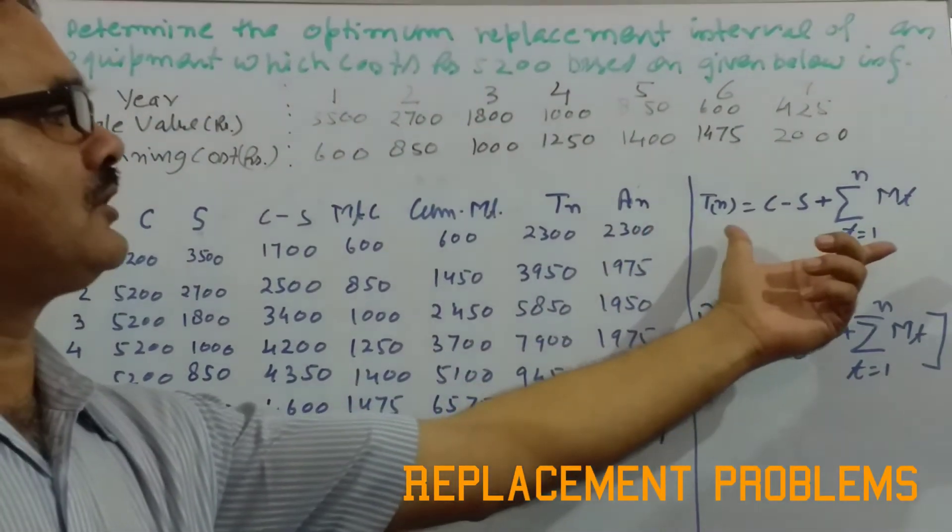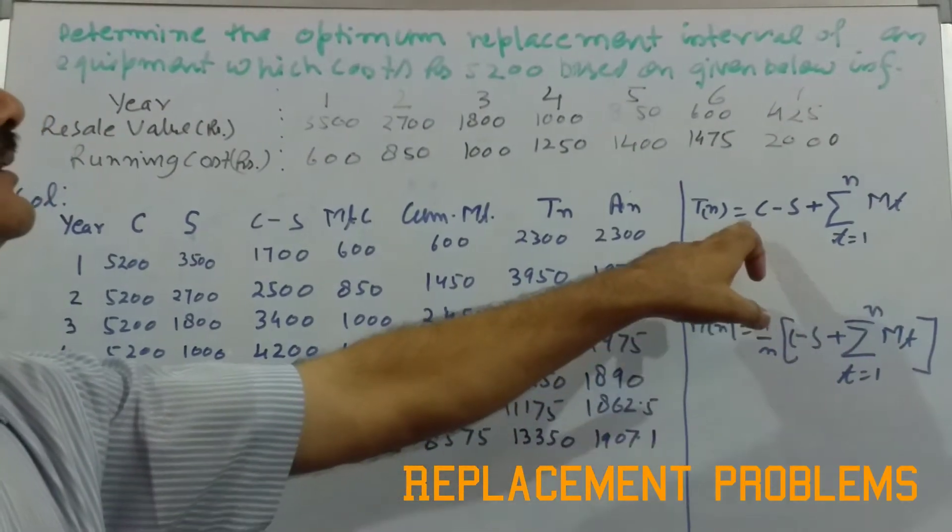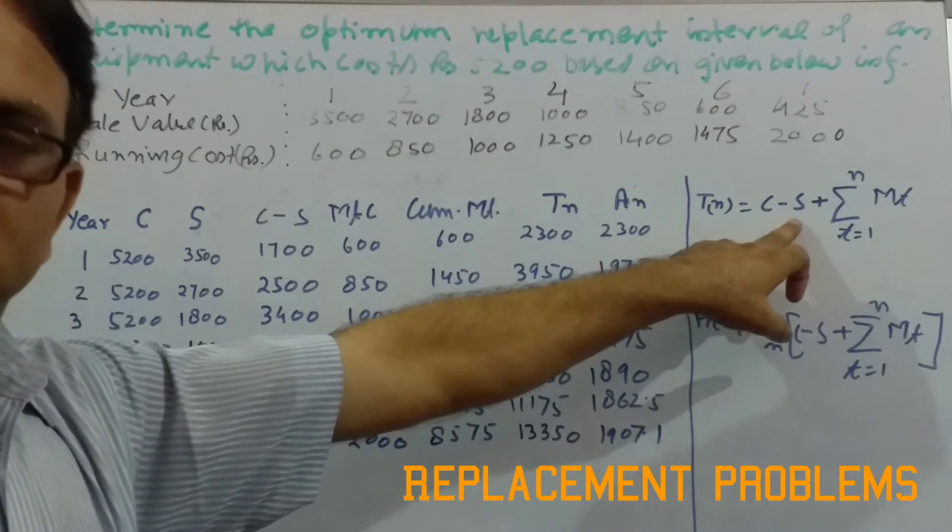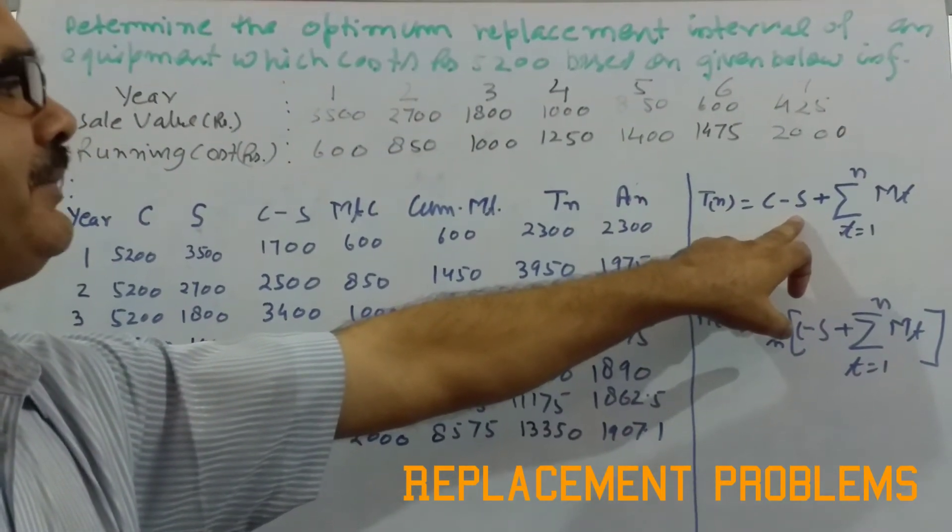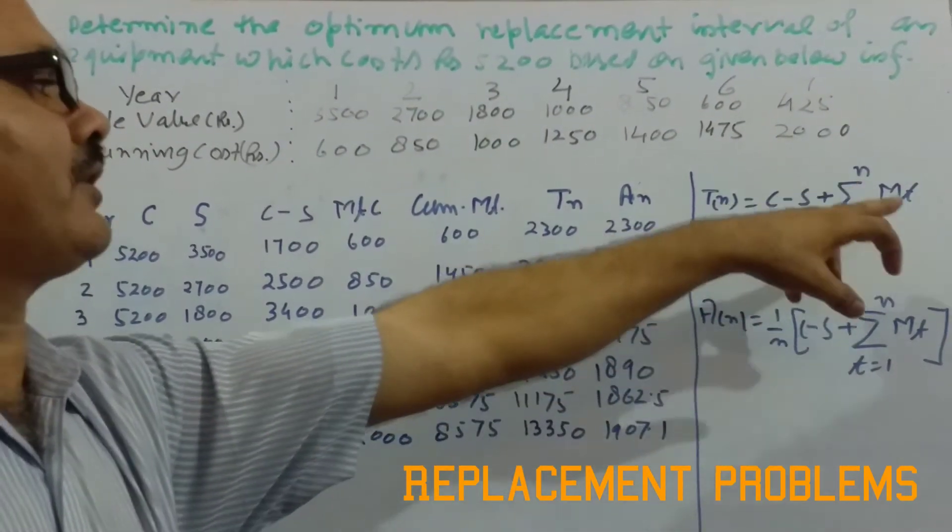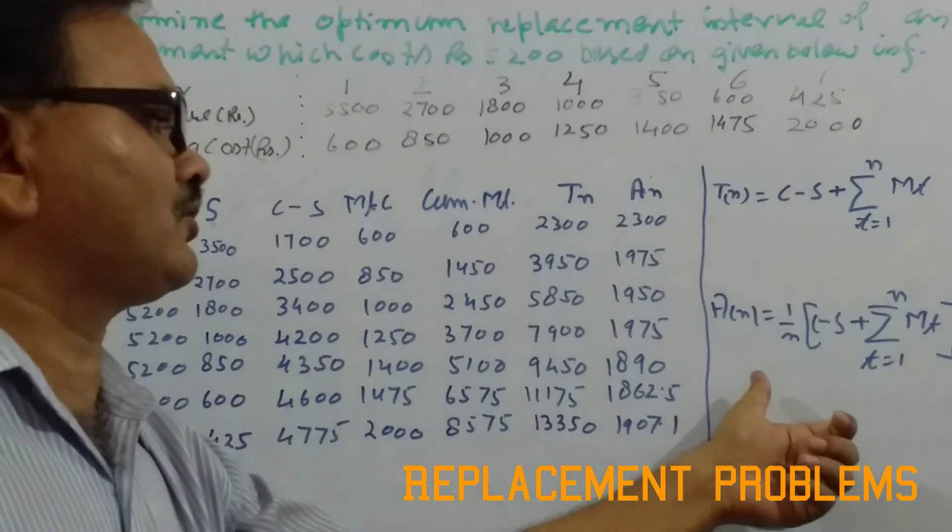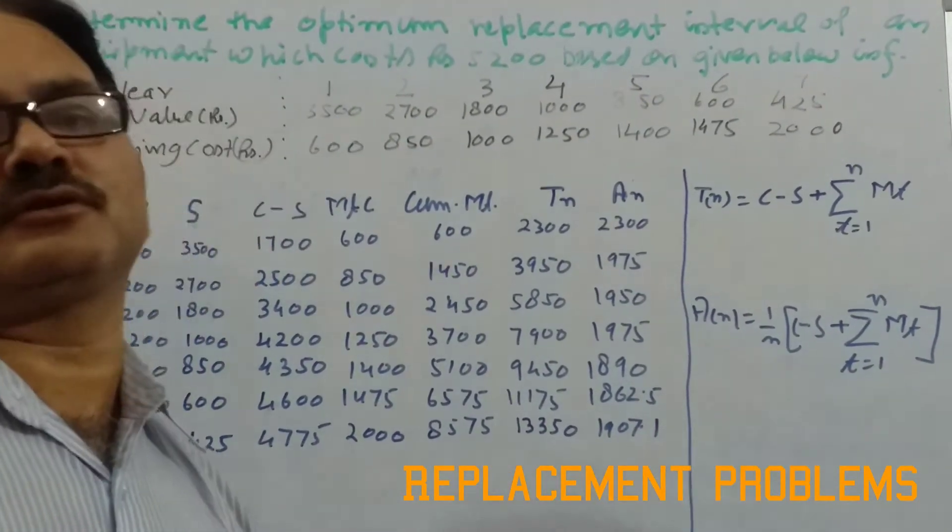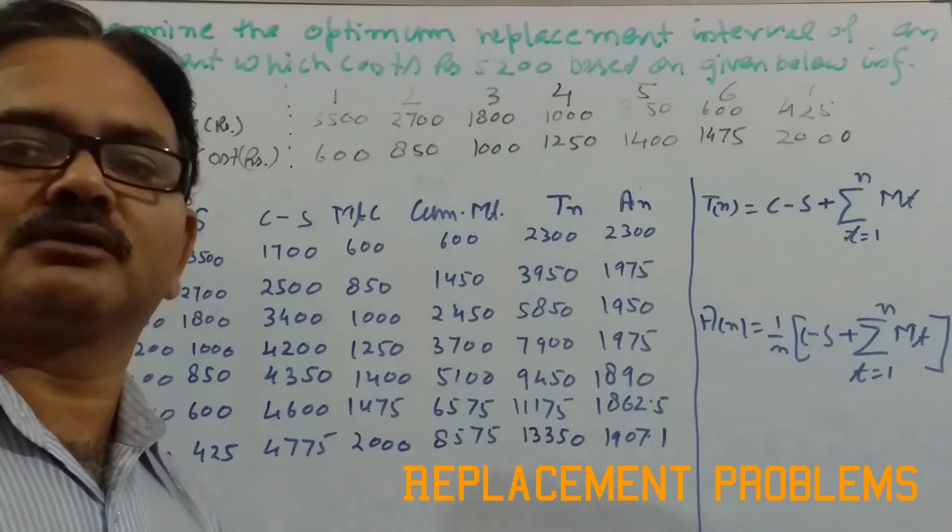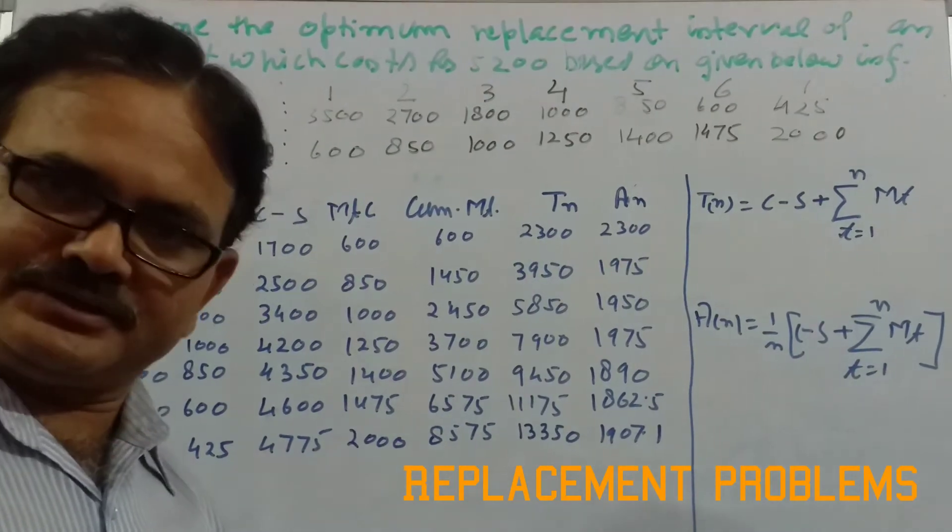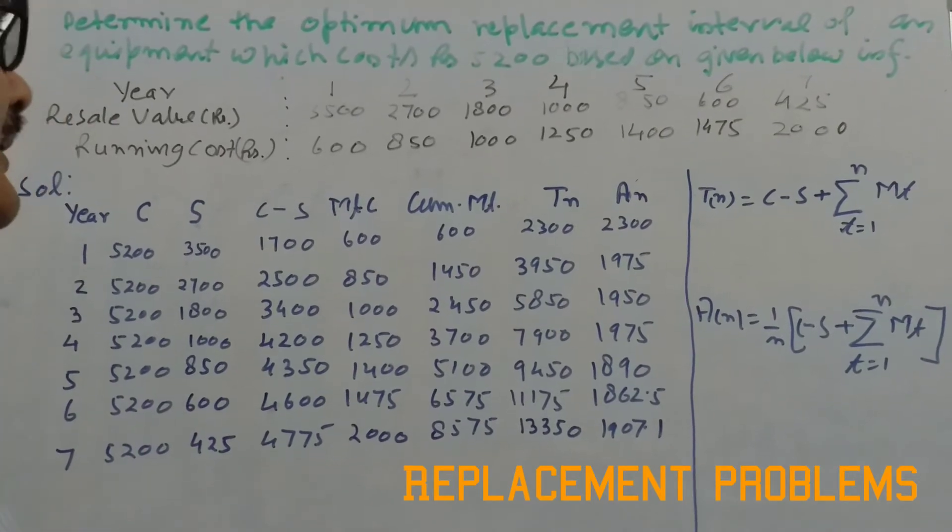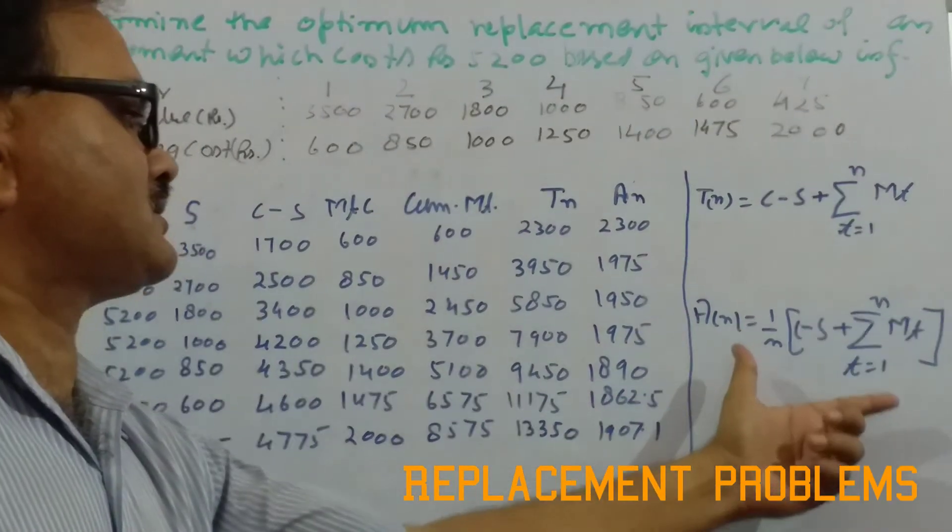So that way the total cost comes out to be purchase cost, that is C, minus cost after certain period of time, that is S for N years, and maintenance cost for N years. Then we calculate the average cost, and on the basis of it we can decide when a particular machine should be replaced. Normally, the particular machine should be replaced in that year in which its average cost is least.